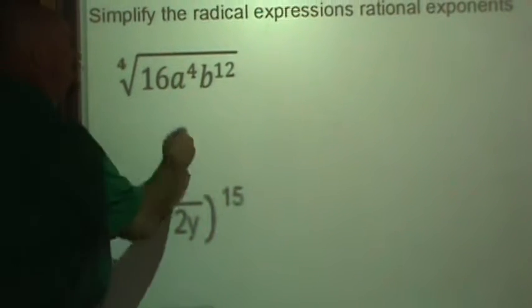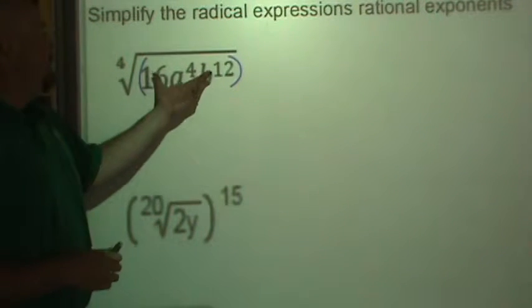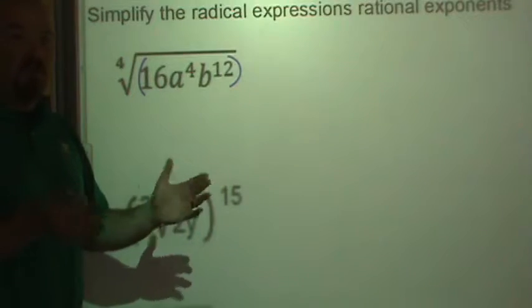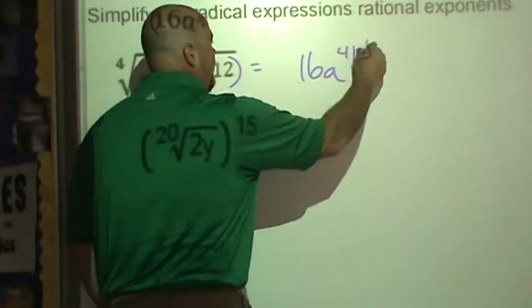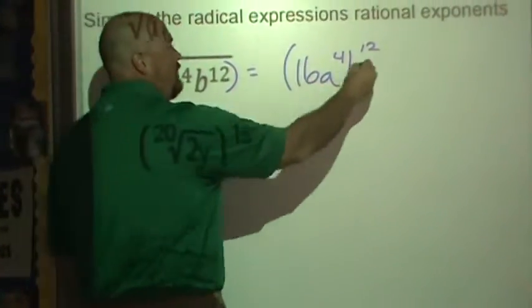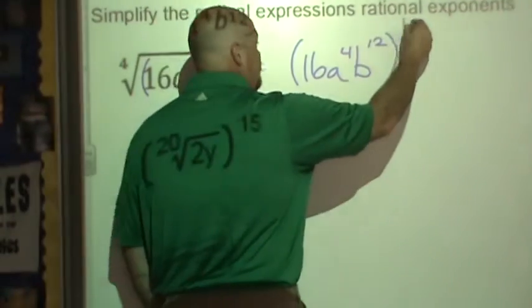Notice everything under here, everything inside the radical, I'm going to put parentheses around that. I want to keep that quantity together. So this is 16a to the fourth b to the 12th, and that's all under this fourth root. So I'm going to raise all of that to the one-fourth power.